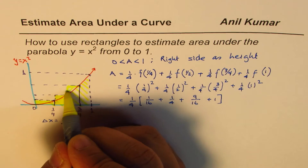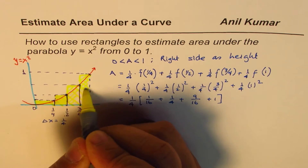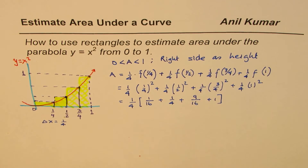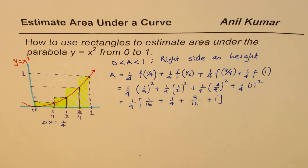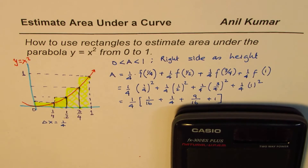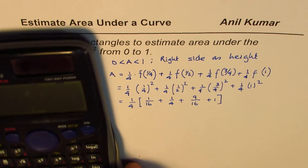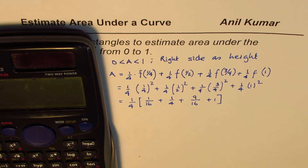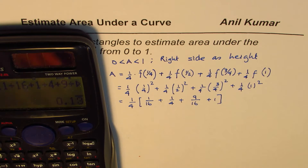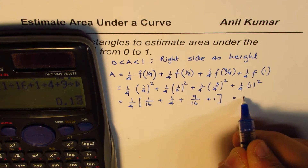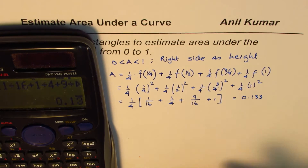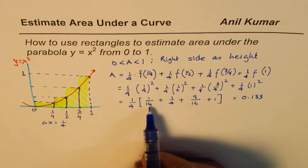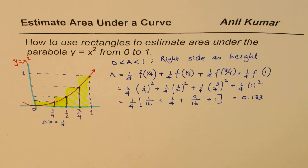This approximate area is actually higher than what we should have gotten, since we took the right side. For a curve that is concave up, the right-side estimate is always an overestimate. Using a calculator, we compute one-fourth times (1/16 + 1/4 + 9/16 + 1).